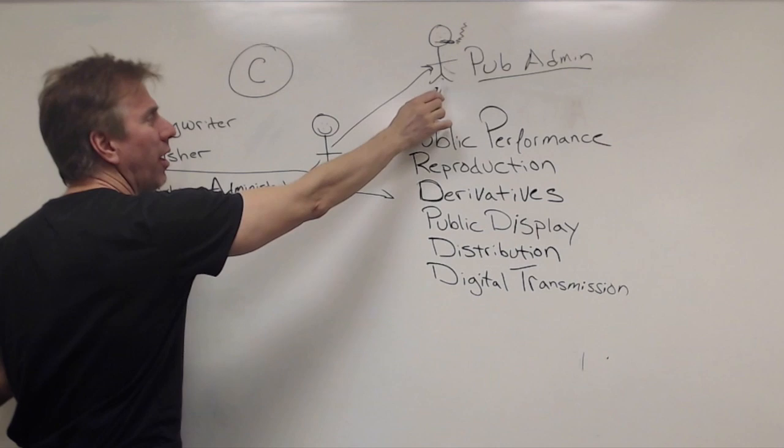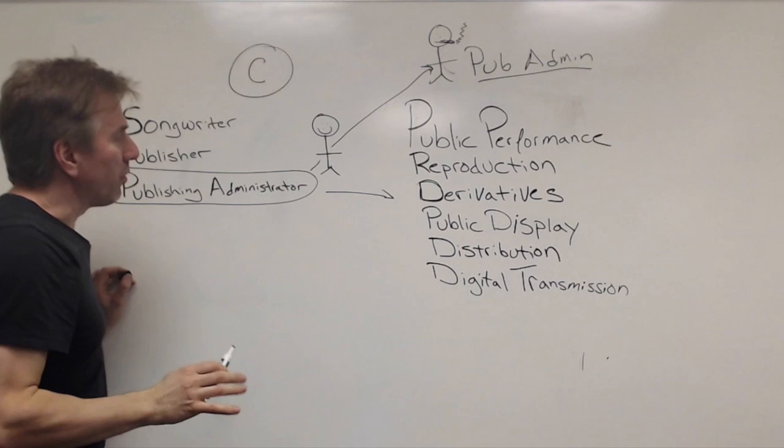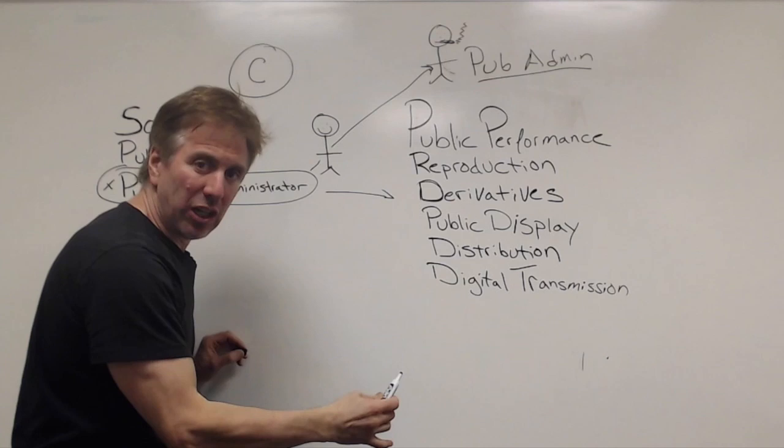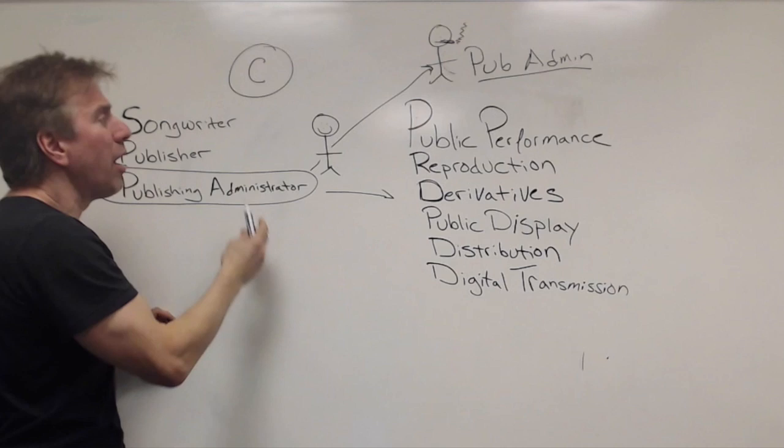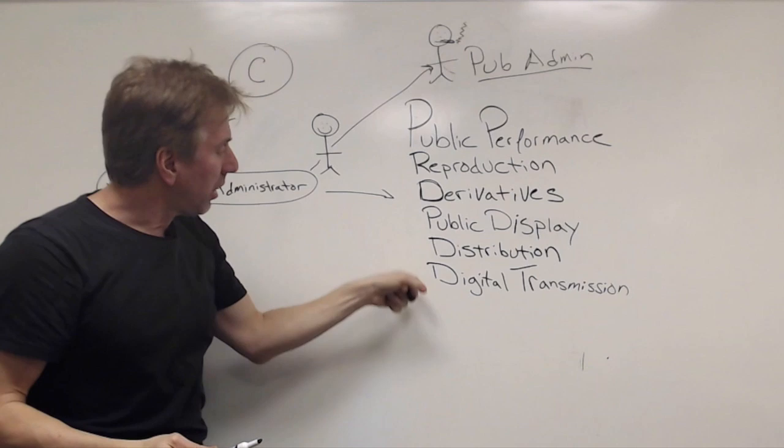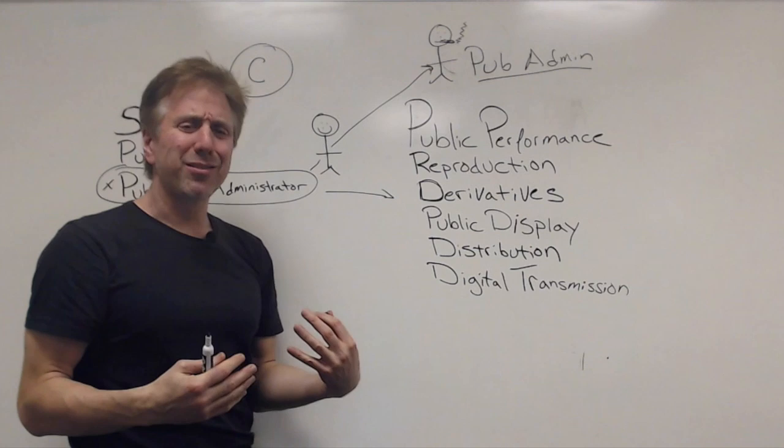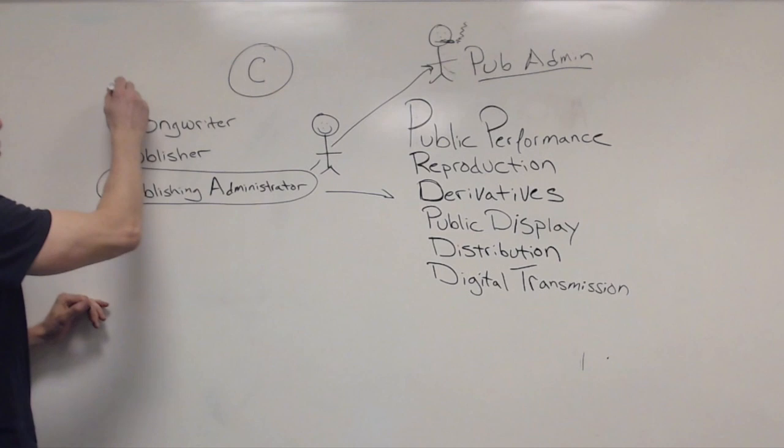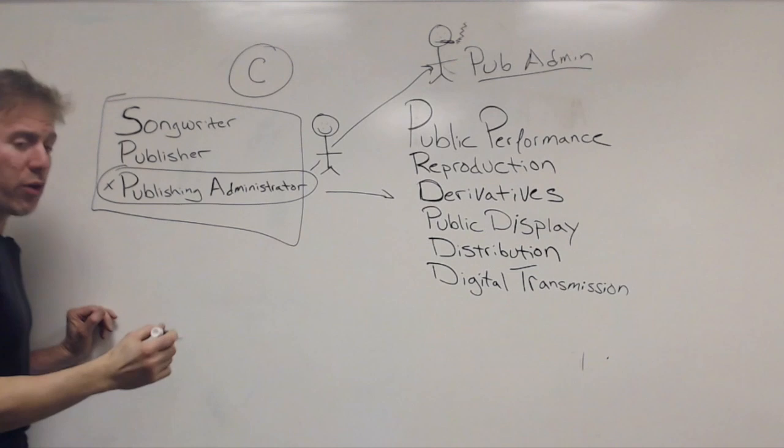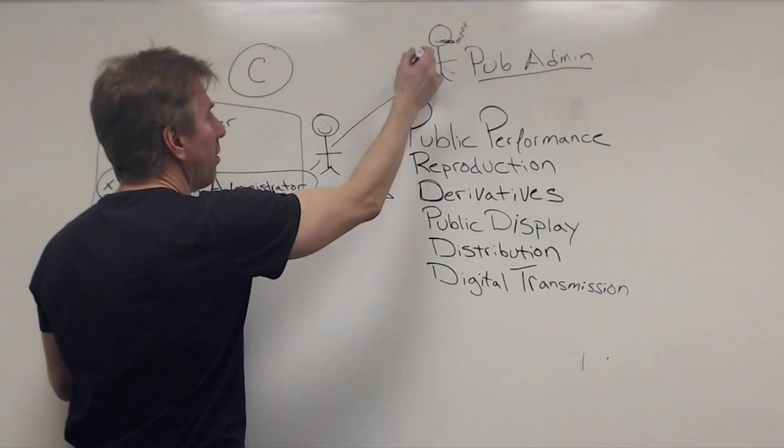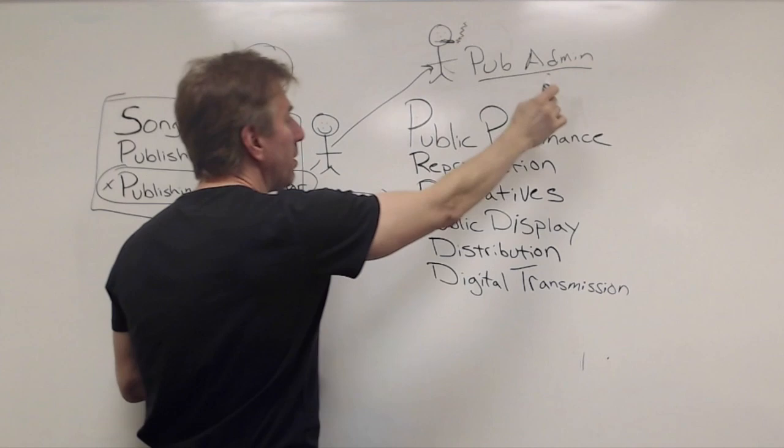So this is what we call a publishing administration deal. You are the songwriter and the publisher. You wrote it, you own it, but you're hiring this entity or this person to license and collect for these six things. So these are the two ways we talk about publishers in the music industry. You have a self-published songwriter, which is a person or entity that controls all three of these rights. Or you have a publishing administration deal where you have outsourced to someone else to do this part, in which case it's pub admin.